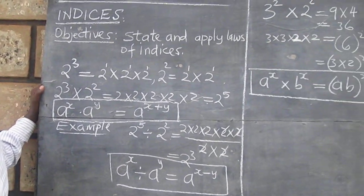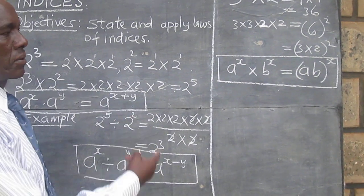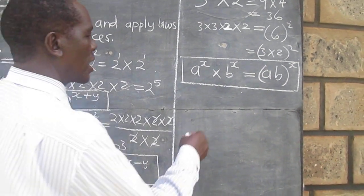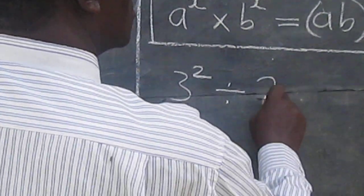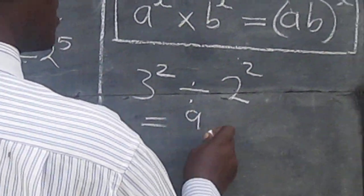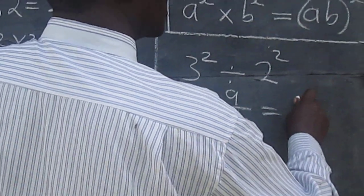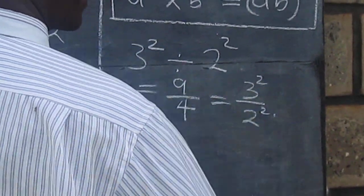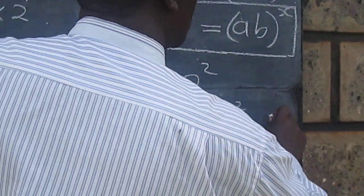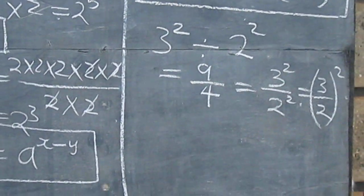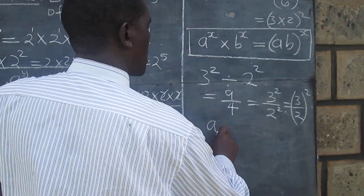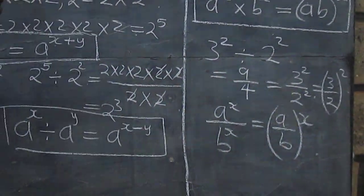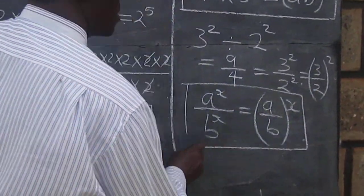We can apply the same idea to division. When we divide 3 squared by 2 squared, this is the same as 9 divided by 4. We can write this as 3 squared over 2 squared, which equals 3 over 2, all raised to the power of 2. The general law states that a raised to x divided by b raised to x equals a divided by b, all raised to x. This becomes Law Number 4.